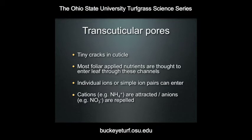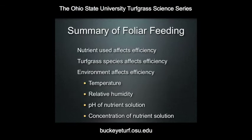Since these channels tend to have a negative charge, it's thought that cations such as ammonium — with its positive one charge — are attracted to these channels, whereas anions such as negatively charged nitrate would actually be repelled. So in summary, the form of nutrient applied to the turf is thought to affect the efficiency of foliar feeding. If you apply your nitrogen as ammonium, you're much more likely to have uptake through the foliage than if you apply nitrate.